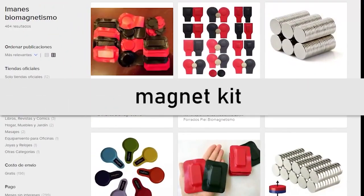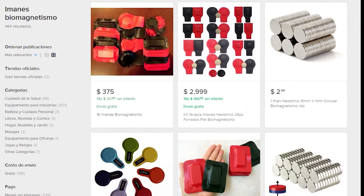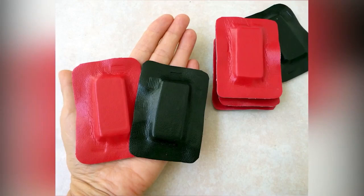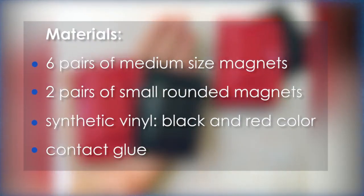Magnet kit. In some places you can get magnet kits for biomagnetism, which will save you all the techniques that we explain in this video. But you will always have the option of getting your own magnets and creating your own kit. For which we recommend starting with at least six pairs of medium size.